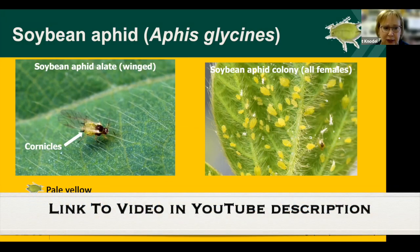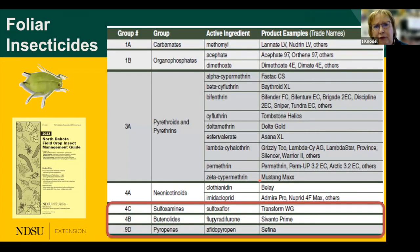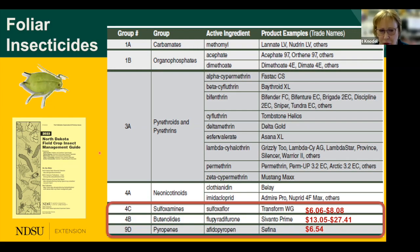As a reminder, always scout for soybean aphid — look on the underside of leaves. We're seeing a slight increase the last two years in late August, especially in the River Valley, but generally not at economic threshold yet. There is widespread pyrethroid resistance, and it's cross-resistance, meaning bifenthrin, Baythroid, and all pyrethroids will not work. Use the newer insecticides: Transform WG, Sevano Prime, and Sefina. They're not more expensive than pyrethroids, so use them when you need to control soybean aphids.